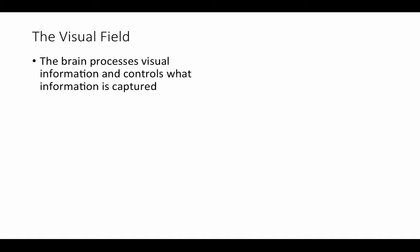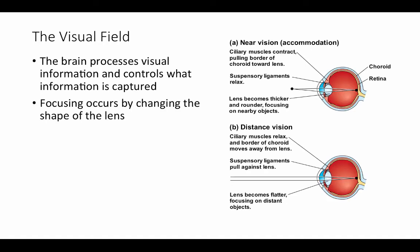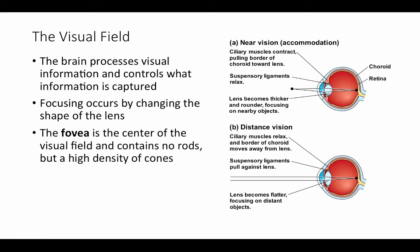The brain processes visual information and controls what information is captured. We can do this consciously by focusing our eyes on particular parts of the visual field by physically changing the shape of the lens. For near vision, the lens is thicker and rounder due to muscular activity, and for distance vision the lens is flatter and thinner — this is under voluntary muscular control. There's a structure in the retina called the fovea, which is the center of the visual field. In humans, this fovea contains no rods but a very high density of cones, so when we really want to distinguish something in high light we focus light on this area for maximum color vision.